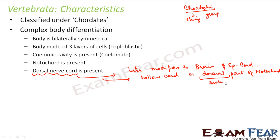Both the protochordate and the vertebrates had the notochord present, but in the case of vertebrates the notochord became a little more complex due to the formation of the dorsal nerve cord, which later formed the brain and spinal cord. So the notochord basically supported the dorsal nerve cord in case of vertebrates.